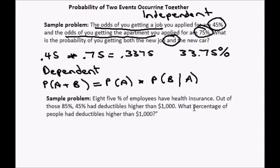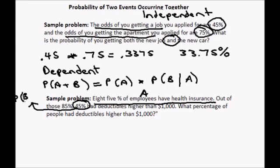So let me show you an example of that. 85 percent of employees have health insurance. That is our event A. Out of those 85 percent, 45 percent had deductibles higher than $1,000. So we are already given the probability of B once A has happened. So the equation is exactly the same. It is just a matter of extracting the figures. I am going to change these to decimals again.